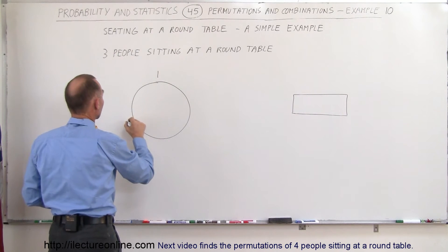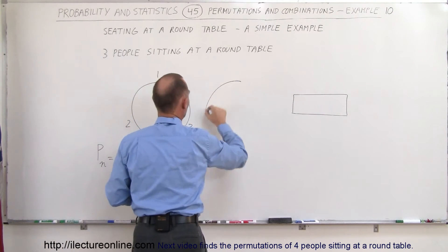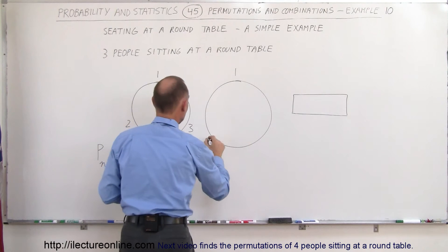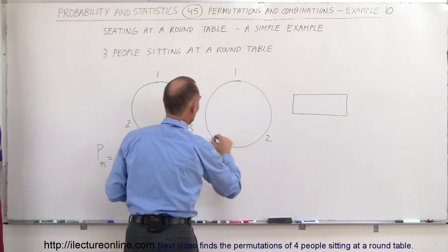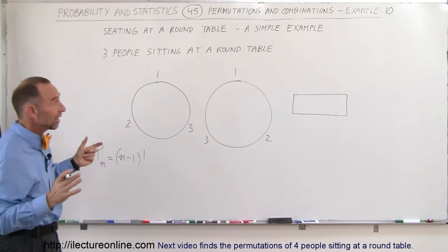For example, the second person could sit there, the third person could sit there, or you could have the very same table, the first person, again, sits anywhere they want, and then the second person will sit there, the third person will sit there, and that's the total number of permutations you can have. In this case, it's just 2.